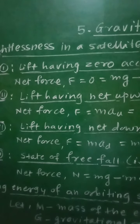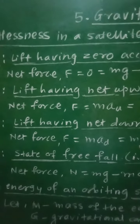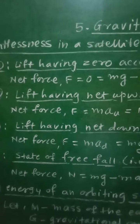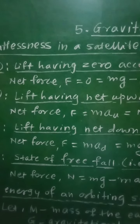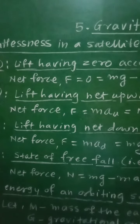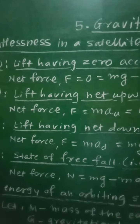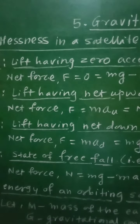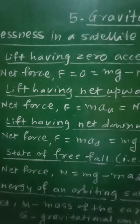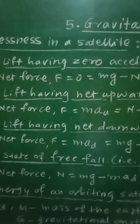According to Newton's second law of motion, we know that force is equal to mass into acceleration, that is F equal to Ma, where F is the force acting on an object of mass M and having its acceleration A. And therefore, we can write F equal to Ma.